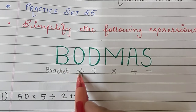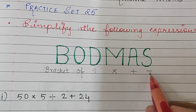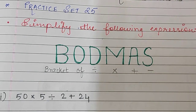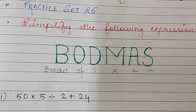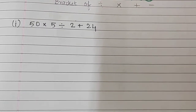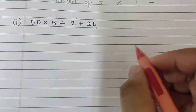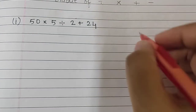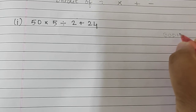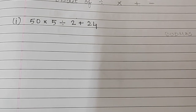It is Bracket Of, Division, Multiplication, Addition, and Subtraction. Now we are going to use this rule for solving our expressions. For the first question, I will write BODMAS in my rough column with a pencil, so that I know how to solve these sums very easily.